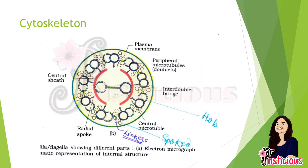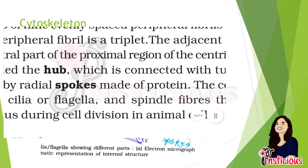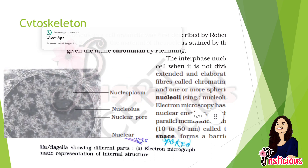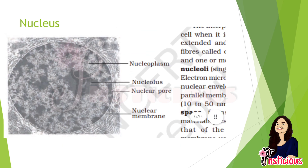The centrosome was discovered by Van Beneden in 1876, and centrioles were discovered by Boveri and Van Beneden. Note these scientists as they may not be in NCERT. The centrosome usually contains two cylindrical structures called centrioles, surrounded by pericentriolar material. Both centrioles in a centrosome lie perpendicular to each other and show a cartwheel organization. The hub and spokes are also present, and spokes are made up of protein.